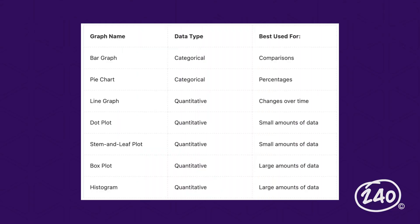Here's a list of common graphs and plots along with the type of data they best represent. If you're working with categorical data, choose a bar graph or pie chart. If you're working with quantitative data, you've got some more options. Line graphs track changes over time. Dot plots and stem and leaf plots are best with small data sets. And box plots and histograms are better with large data sets.